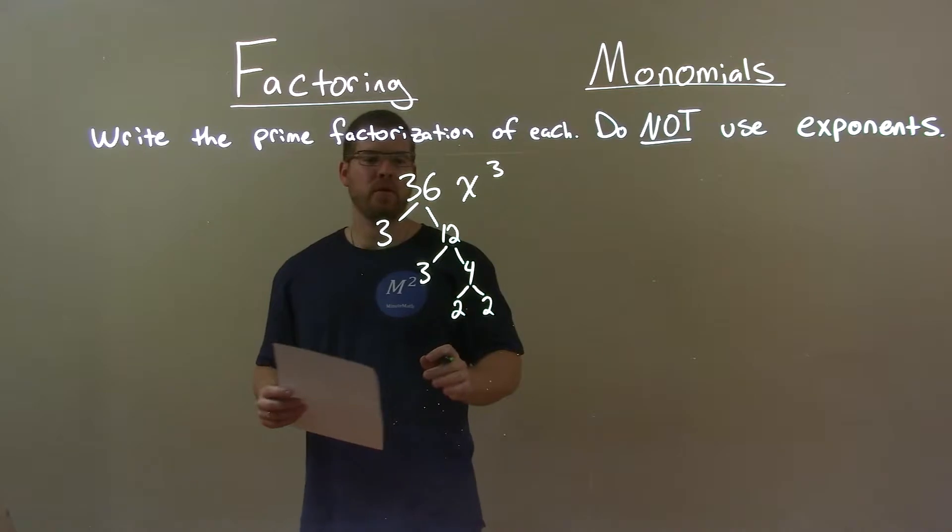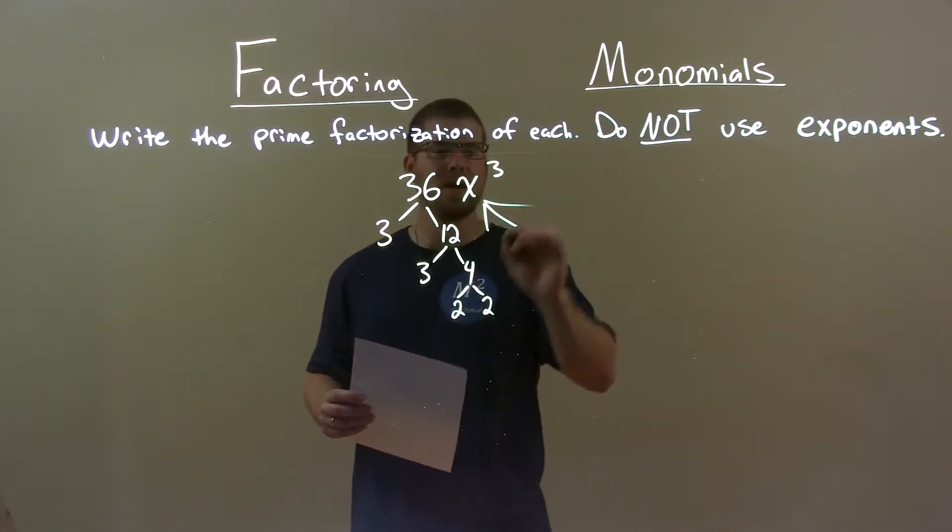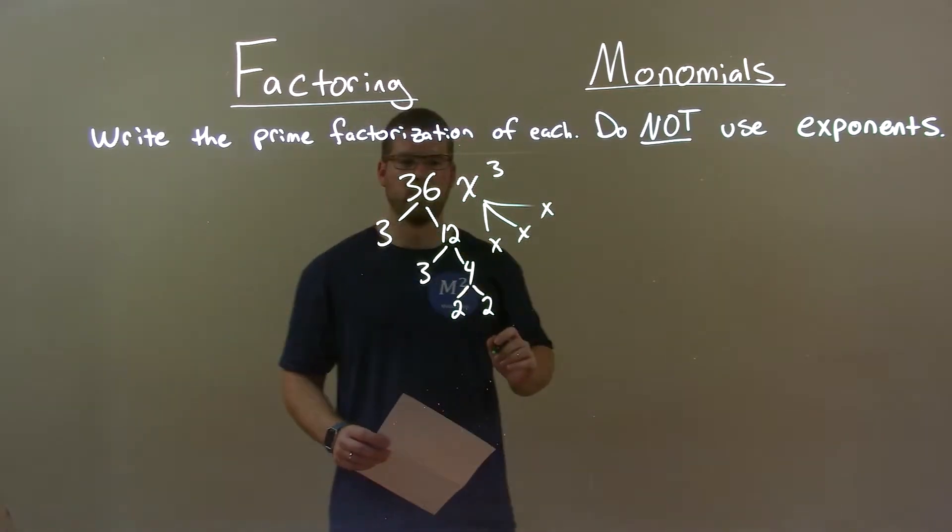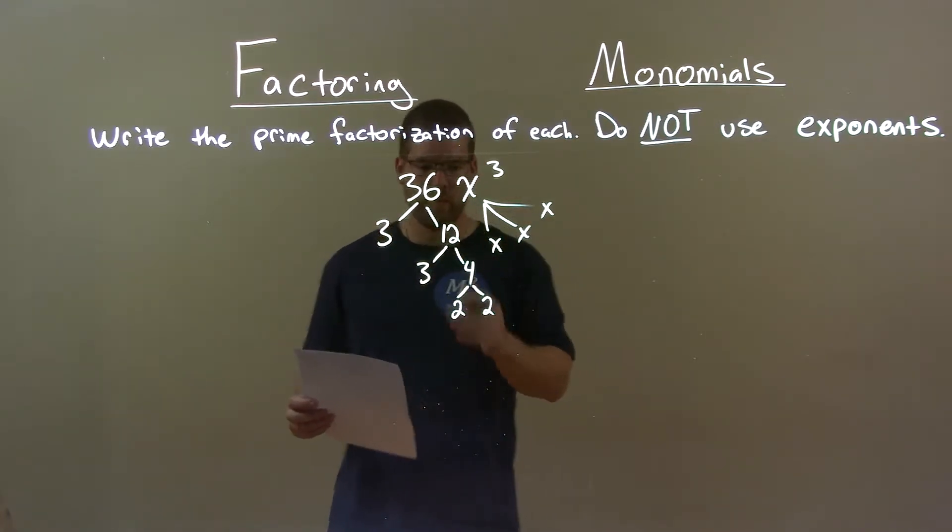We've broken down 36 to all multiplied prime numbers. x to the third is just x times x times x. So now we have everything broken down completely to its pure form.